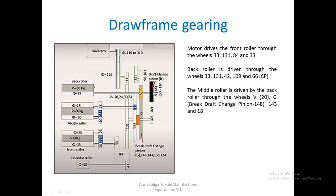The middle roller is driven by the back roller through wheels V and G, which is the brake draft change pinion, 143, and 18. The route is: back roller V drives G — the brake draft change pinion — and on the same shaft there is a 143-tooth wheel driving the 18-tooth wheel, which drives the middle roller.